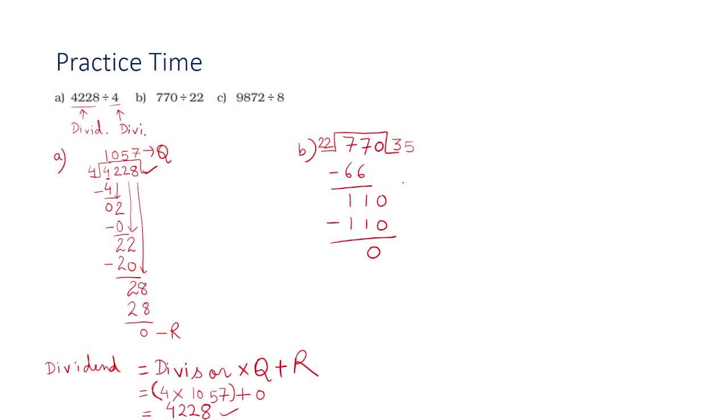You can check your answer also. When you multiply the quotient by the divisor, you will be getting 770 as the answer.